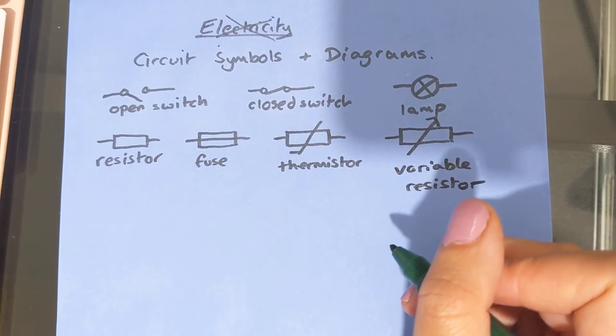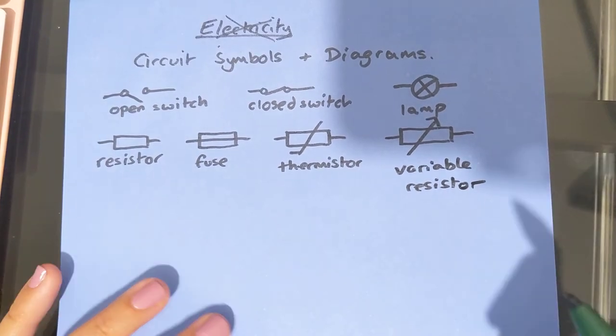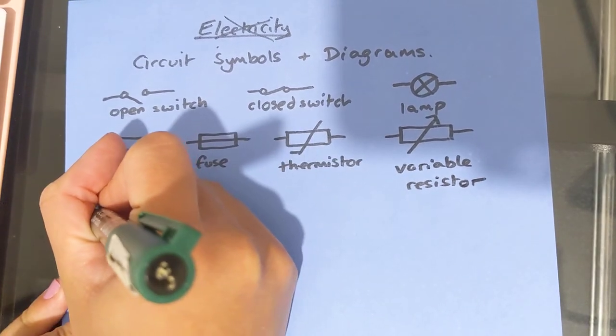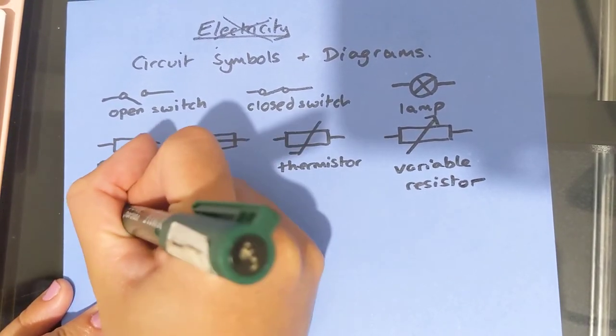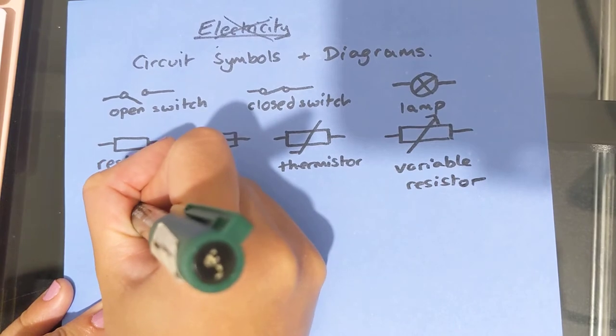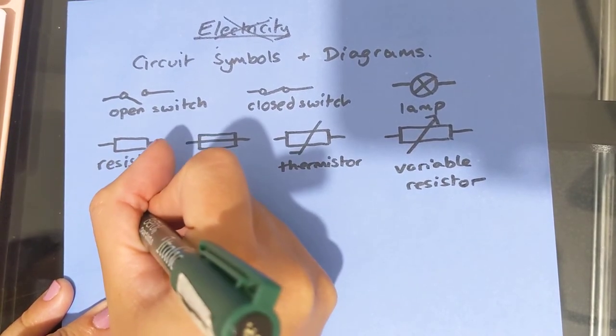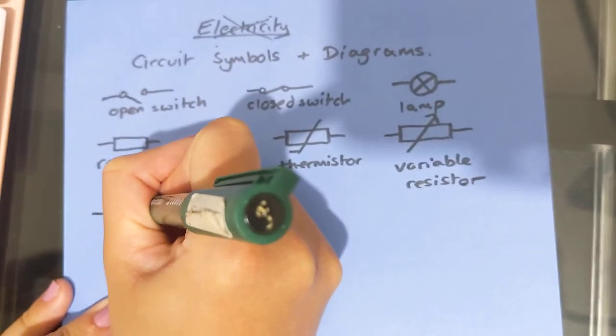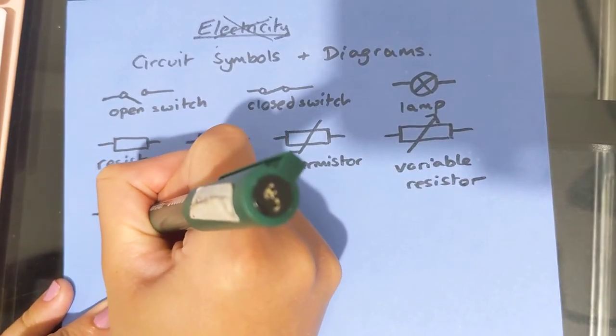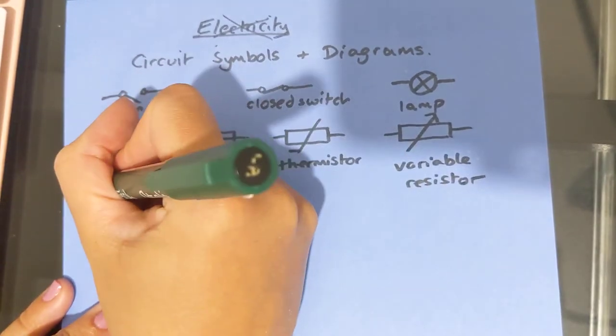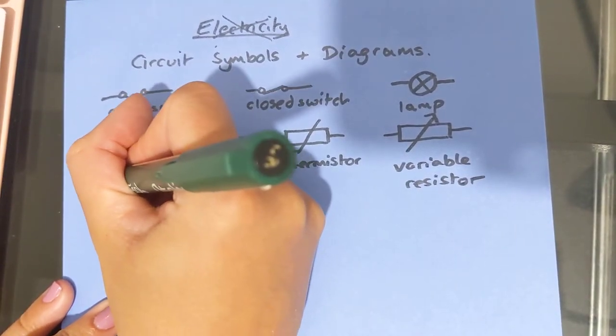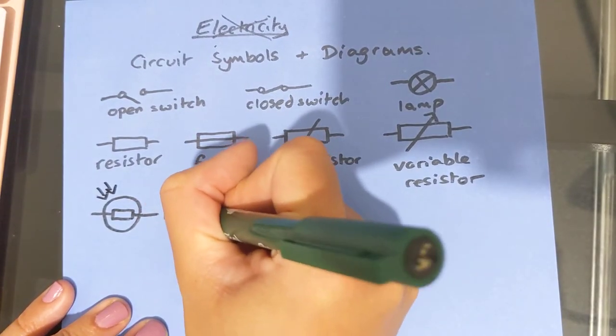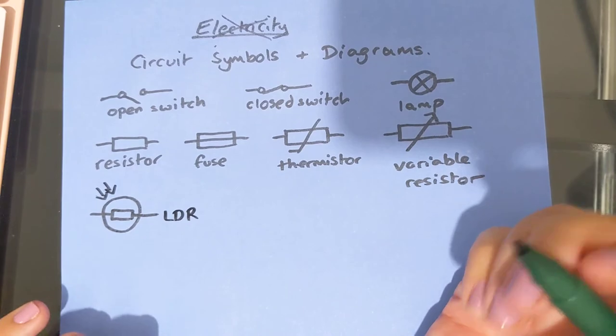And then the next type of resistor is what's called a light dependent resistor or LDR. So the symbol for that, you're going to draw a symbol for a resistor, but a little bit miniature. So that tells me it's a resistor. Then you put a circle around it. And then you have two arrows pointing diagonally downwards, and those represent light. And so that's our LDR, our light dependent resistor.